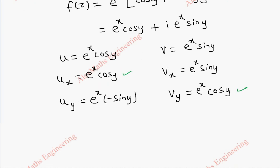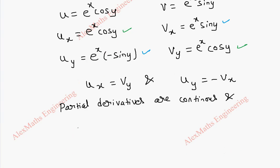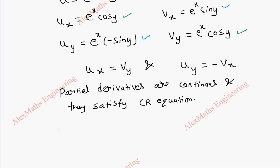So from this we can see ux equals vy. And we can also see uy is minus times vx. So uy equals minus vx. So partial derivatives are continuous and they satisfy CR equation. They satisfy CR equations, and let's find uxx.